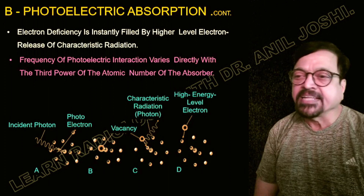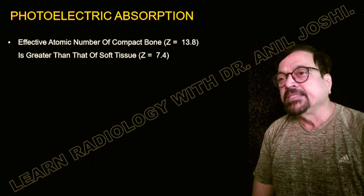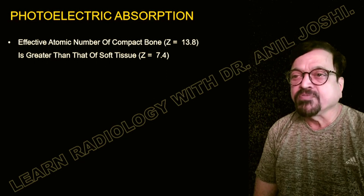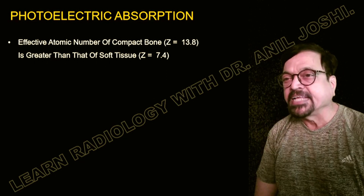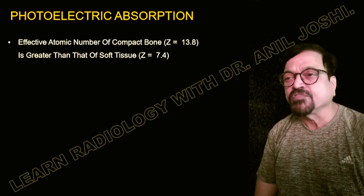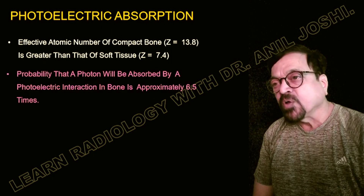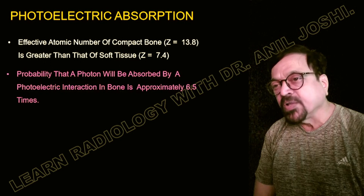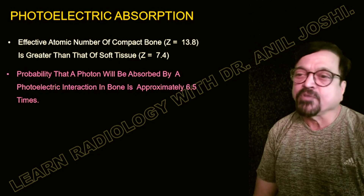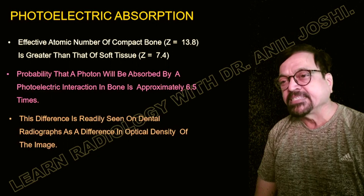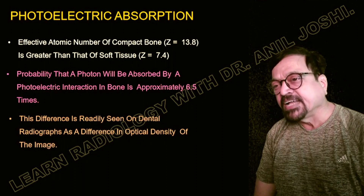The effective atomic number of compact bone is 13.8, which is greater than that of soft tissue at 7.4. The probability that a photon will be absorbed via photoelectric interaction in bone is approximately 6.5 times greater than in soft tissue. This difference is readily seen on dental radiographs as a difference in the opacity or optical density of the images.